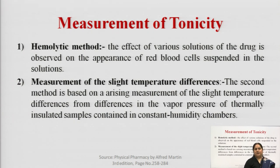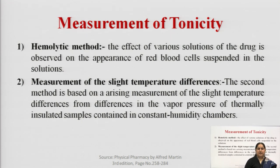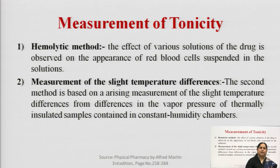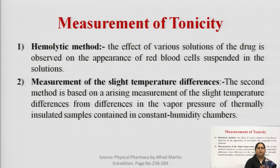The first method of measuring tonicity is the hemolytic method. The effect of various solutions of the drug is observed on the appearance of red blood cells. Blood cells are suspended in the drug solution — if they remain intact, the drug is isotonic. If crenation or hemolysis occurs, it means the drug is not suitable for use as a parenteral.